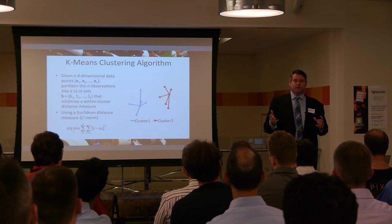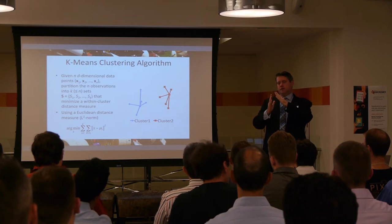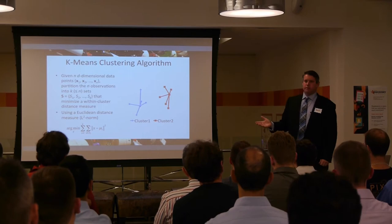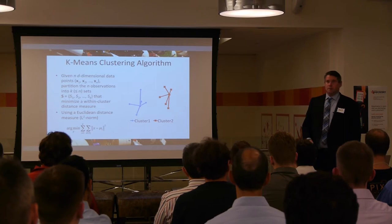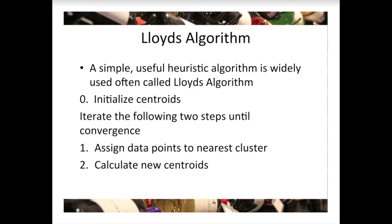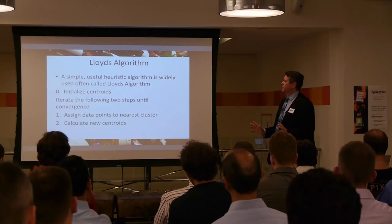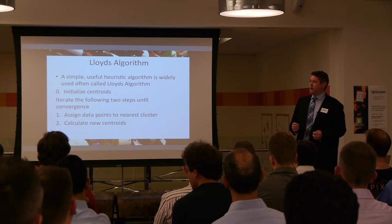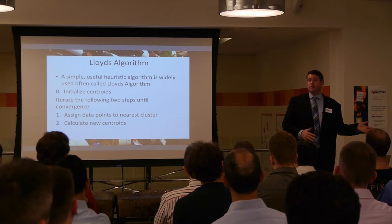A Euclidean distance measurement is just like the hypotenuse of a right triangle. When you have many-dimensional data, it extends to hyper points. But it's not the only distance measurement — there are others like Manhattan distance or Mahalanobis distance. This algorithm is used a lot in practice because it's very simple and easy to implement. It's a heuristic algorithm — not one where you apply a closed-form mathematical function like linear regression for least squares. It's an iterative heuristic.